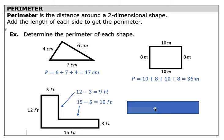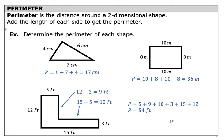So all together, 5 plus 9 plus 10 plus 3 plus 15 plus 12. All together, that adds to 54 feet.